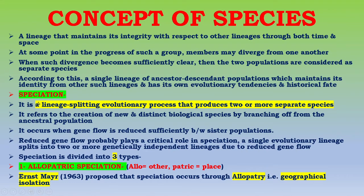The process of forming new species is known as speciation. Speciation is a lineage-splitting evolutionary process that produces two or more separate species. It refers to the creation of new and distinct biological species by branching off from the ancestral population. It occurs when gene flow is reduced sufficiently between sister populations. A single evolutionary lineage splits into two or more genetically independent lineages due to reduced gene flow. The phenomenon of speciation is divided into three types.